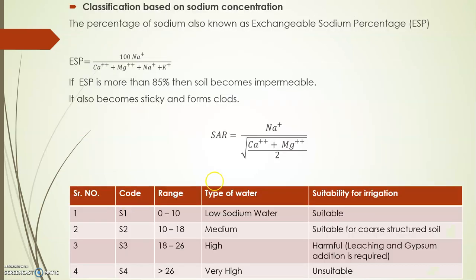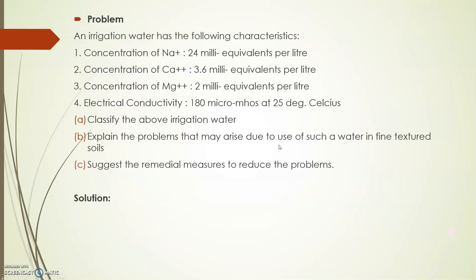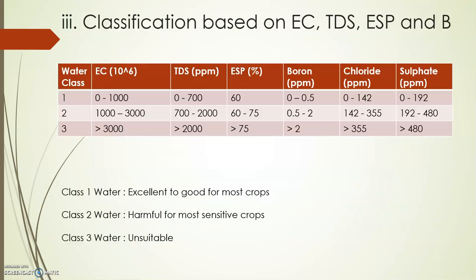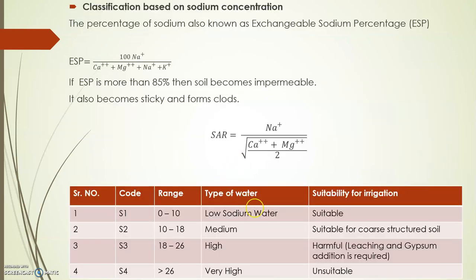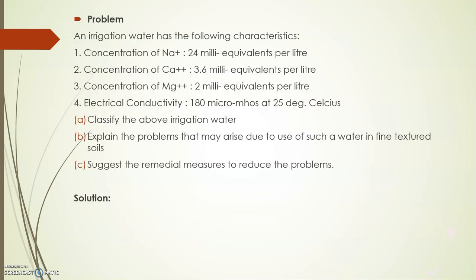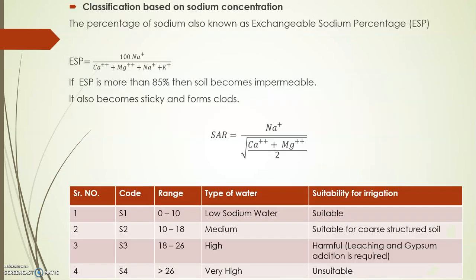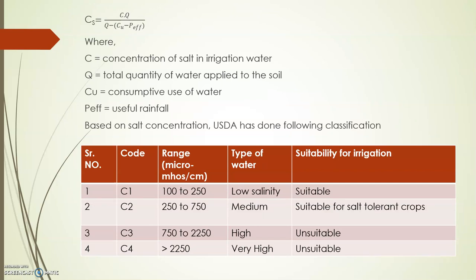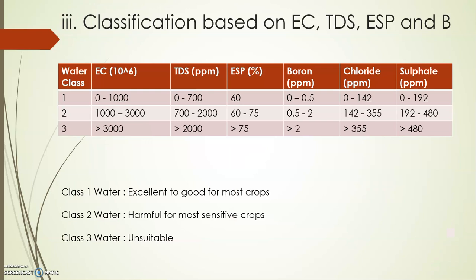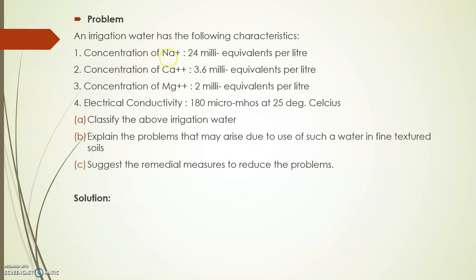Whatever SAR value you get, use the classification table to determine whether it is low, medium, high, or very high sodium water — coded as S1, S2, S3, or S4. Similarly, classify based on electrical conductivity (EC = 180 is already given) to determine whether it falls under C1, C2, C3, or C4. Combining these, you may get a class like S1C1, S1C2, S2C2, and so on.